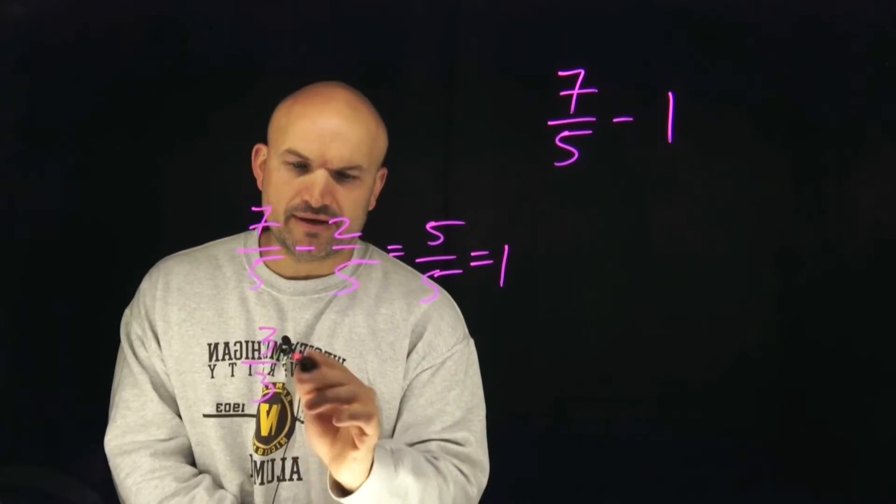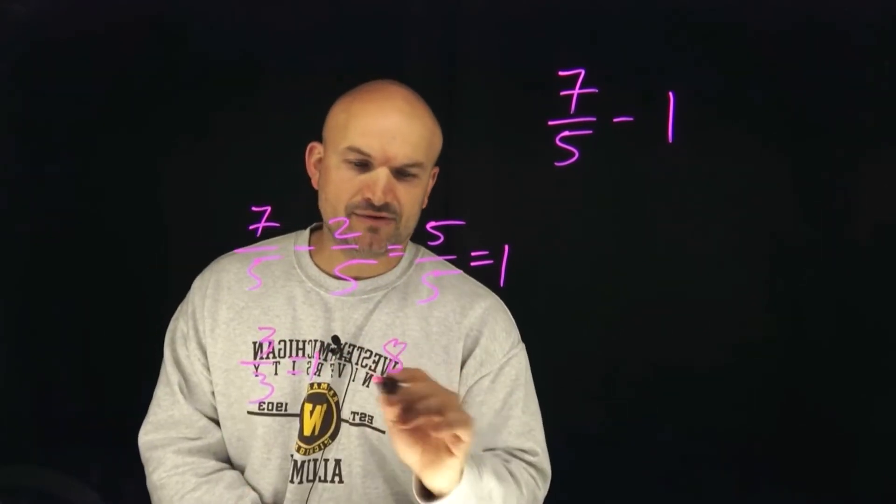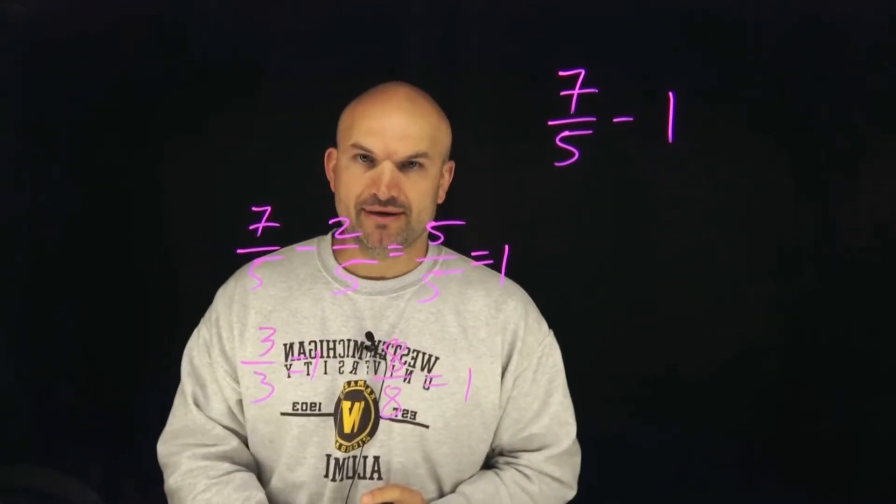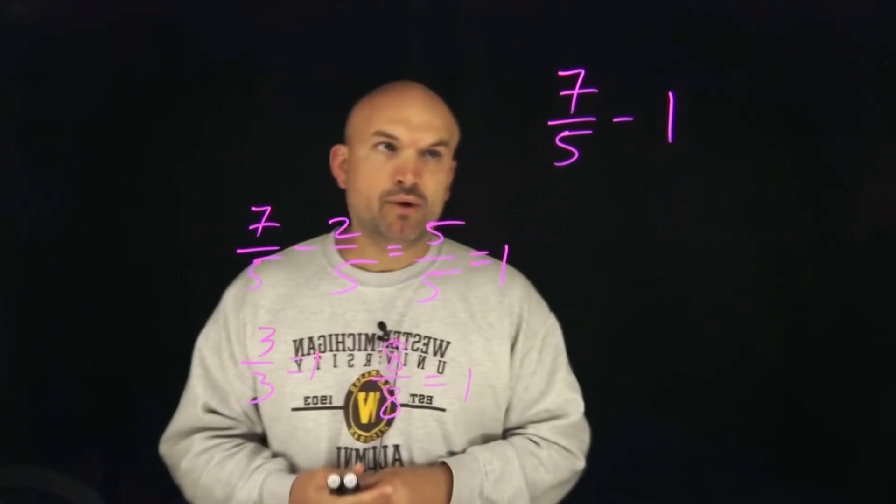What else is equal to one? What about three over three? That's also equal to one. What about eight over eight? That's also equal to one. So any number divided by itself is going to equal one.